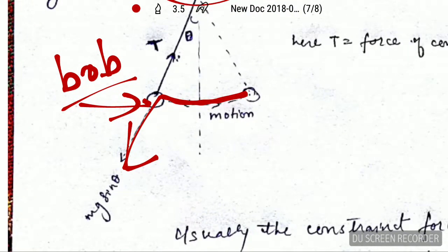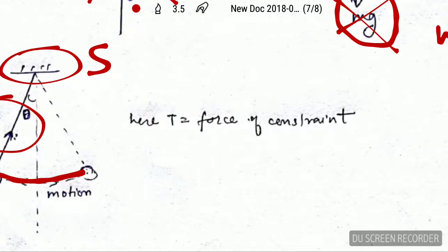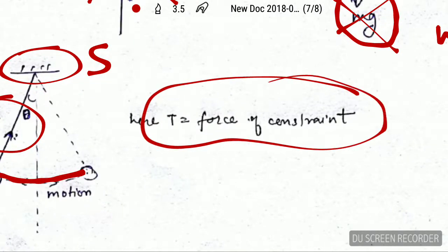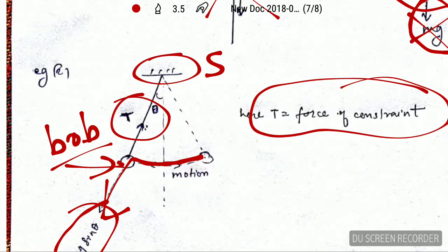The reason is that if due to weight, the force mg sin theta, it tries to go down, then the tension in the wire will prevent it. The tension in the wire will work like the force of constraint which will hold the bob and only allow it to move to and fro in this way.